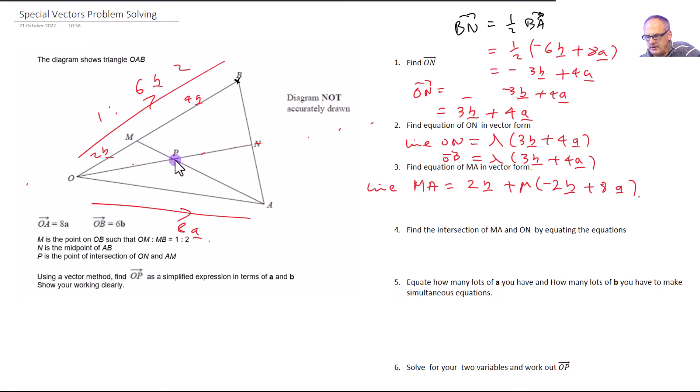And obviously P is on that line, so we can say that OP is also equal to 2B plus mu minus 2B plus 8A. So we've got two equations for OP. So they must be equal to each other because they're both OP. So OP, I'm going to multiply this out now. This will give us 3 lambda B, and lambda times 4A will give me plus 4 lambda A. And we're going to make that equal to this bit of OP. And we've got 2B plus minus 2 times mu, so it's minus 2 mu times B and plus another mu times by 8, so that's plus 8 mu A.